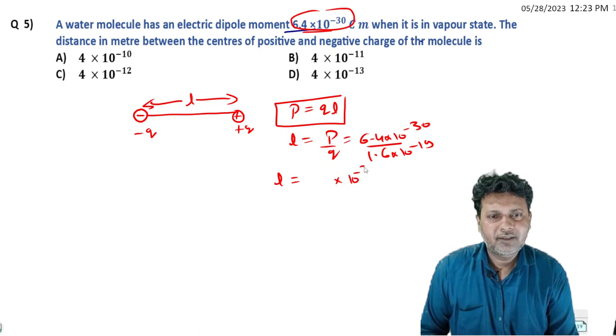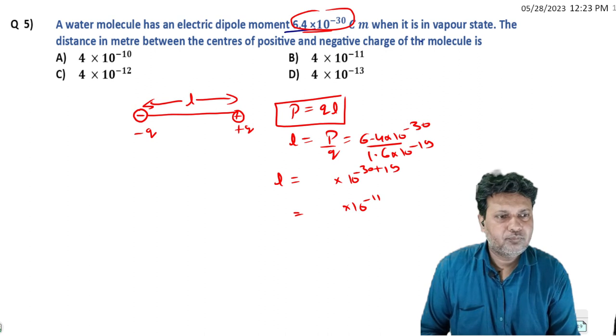times 10^-30 plus 19, which is 10^-11. So 10^-11, and 6.4 divided by 1.6...